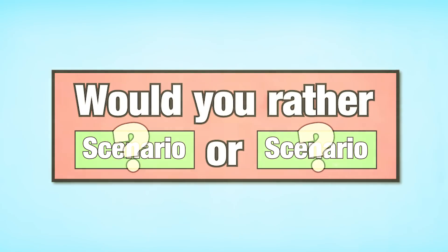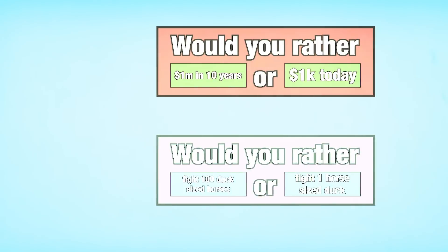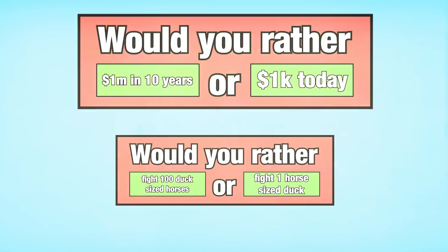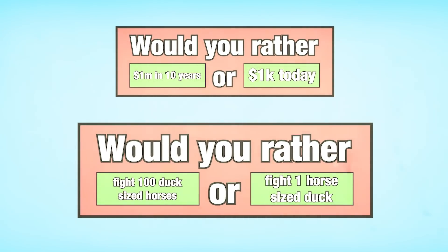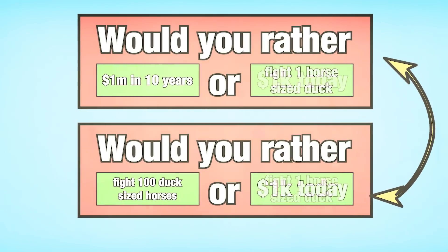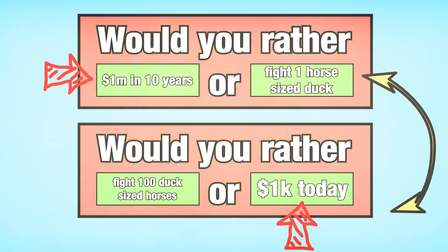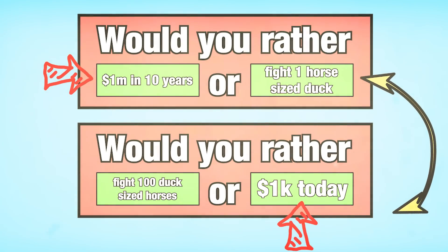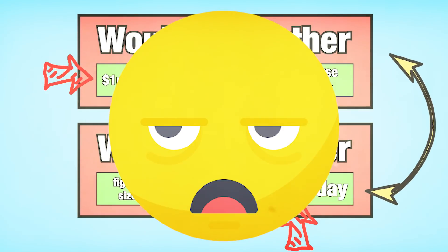If we're going to randomly pair scenarios together, we have to pay very close attention to detail. Take these two situations: would you rather have $1 million in 10 years or $1,000 today? And would you rather fight 100 duck-sized horses or one horse-sized duck? They both work well alone, but if you mix their scenarios, most people would rather take any money over fighting anything. So mixing such different scenarios could make for a very boring game.